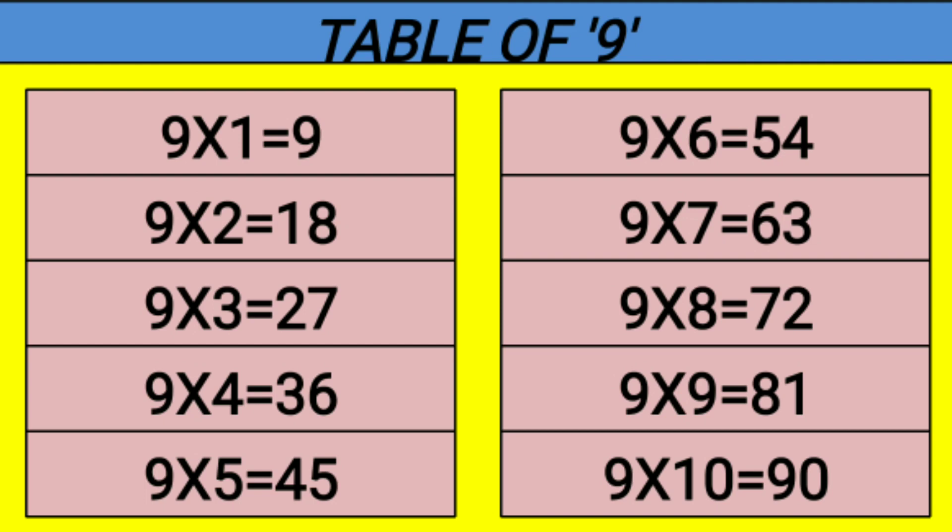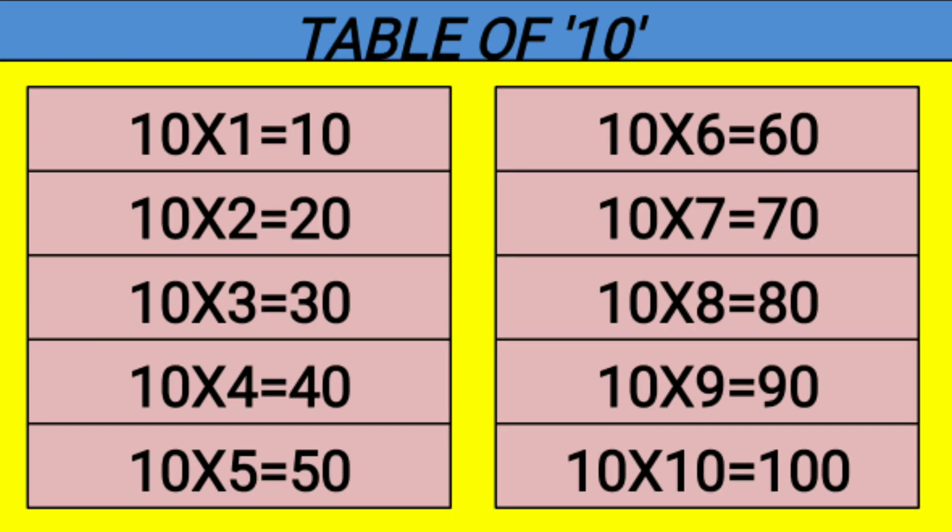9 10s are 90. Table of 10. 10 1s are 10, 10 2s are 20, 10 3s are 30, 10 4s are 40, 10 5s are 50, 10 6s are 60, 10 7s are 70, 10 8s are 80, 10 9s are 90, 10 10s are 100. Thank you!